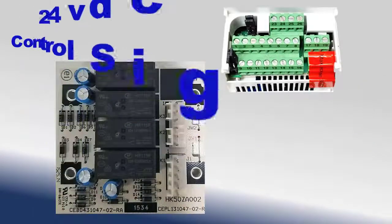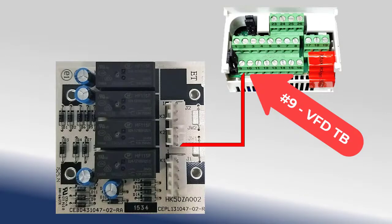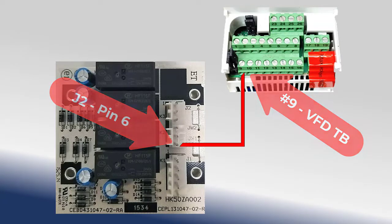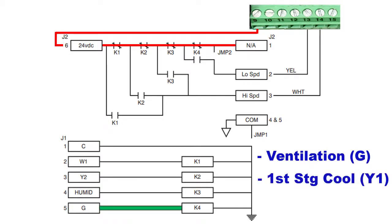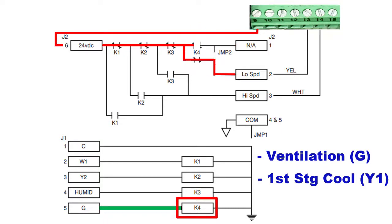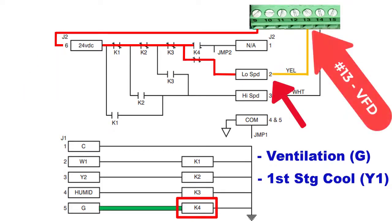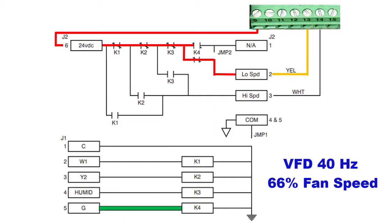This 24V DC control voltage is generated by the VFD and routed from terminal number 9 on the ACS320 VFD terminal strip to the fan control board terminal J2. During ventilation operation or the first stage of cooling in two-stage equipment, the thermostat signal is routed to the fan speed board at terminal plug J1. This 24V AC signal closes relay K4. When the K4 relay is closed, the 24V DC signal from J2 terminal pin 6 is returned to the VFD at terminal 13, initiating a command for the VFD to come to 40Hz, running the motor at 66 percent of fan speed.